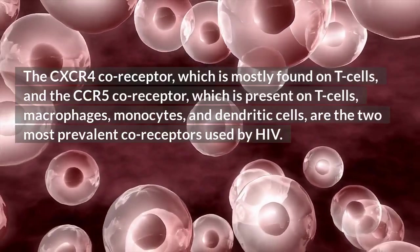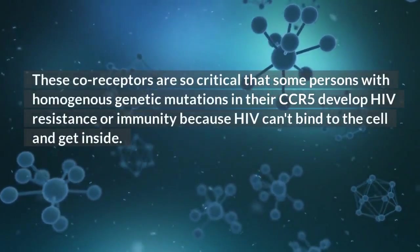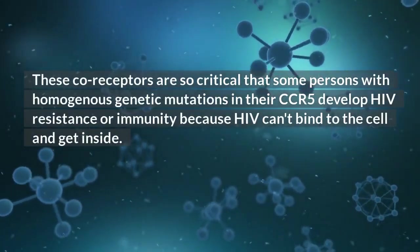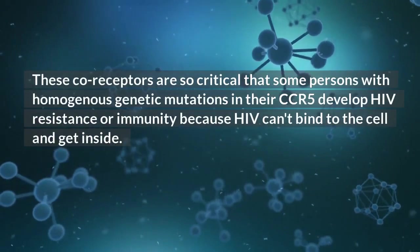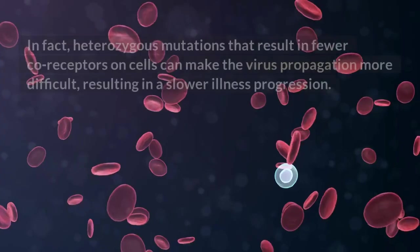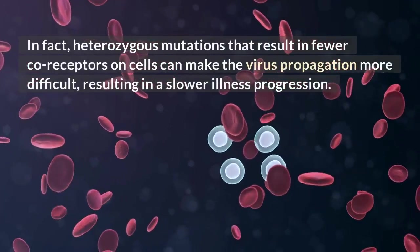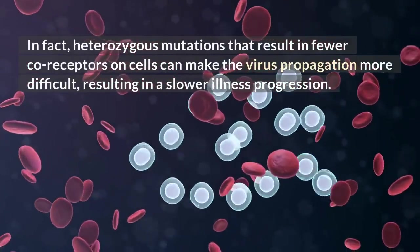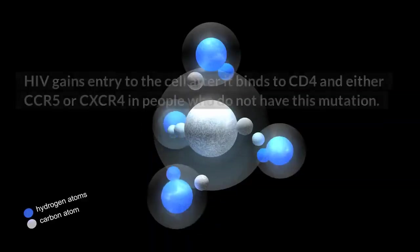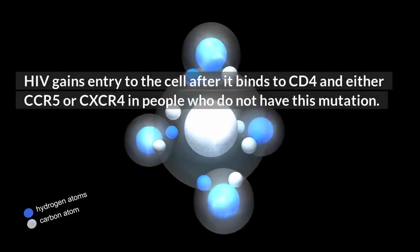These co-receptors are so critical that some persons with homozygous genetic mutations in their CCR5 develop HIV resistance or immunity because HIV can't bind to the cell and get inside. In fact, heterozygous mutations that result in fewer co-receptors on cells can make virus propagation more difficult, resulting in a slower illness progression. HIV gains entry to the cell after it binds to CD4 and either CCR5 or CXCR4.